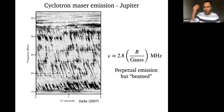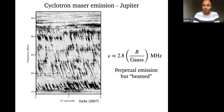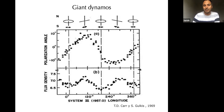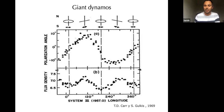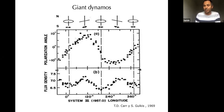This emission is also beamed, giving a lighthouse effect — emission goes in preferred directions, and as Jupiter rotates you see periodic pulses. Early measurements showed the polarization angle and flux density of Jupiter's emission versus rotational longitude, with clear rotational modulation stable over many rotations. You can use this to work out Jupiter's rotation period. Extended to exoplanets, this is remarkable because we don't have an easy way to find exoplanet rotation rates — but you can just do it using this lighthouse effect if you detect the radio emission.